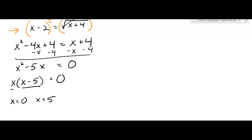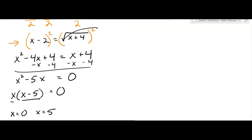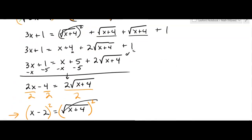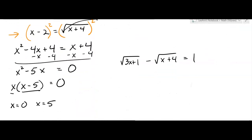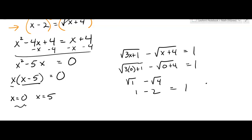We have to check both solutions in the original equation. Let's try x equals 0 first. Plugging in 0 gives the square root of 1 minus the square root of 4, which is 1 minus 2 equals negative 1 — that's not 1. So x equals 0 doesn't work; it's an extraneous root.